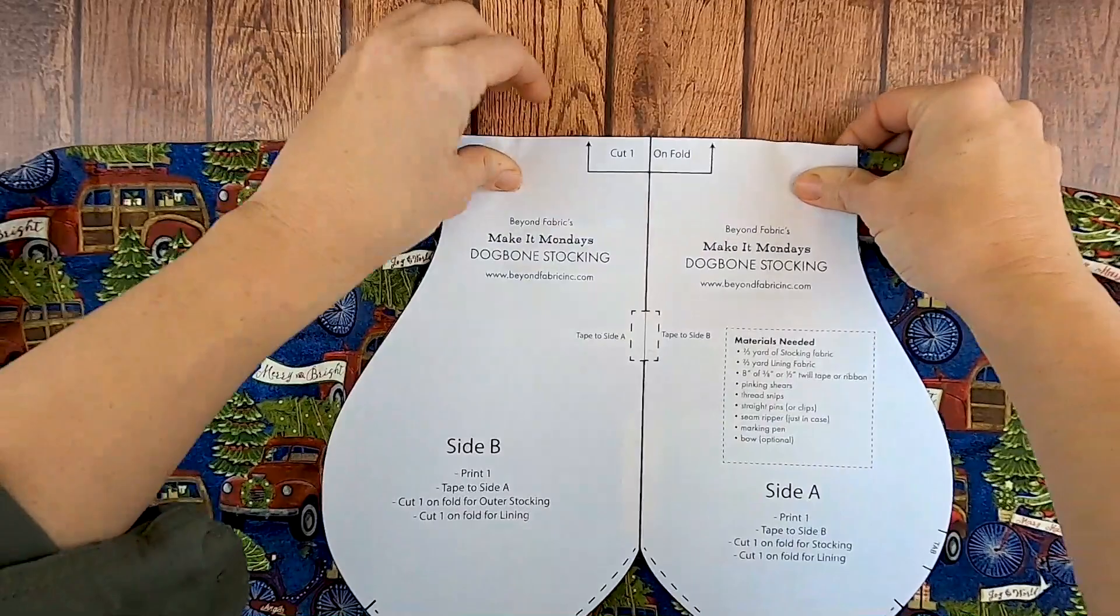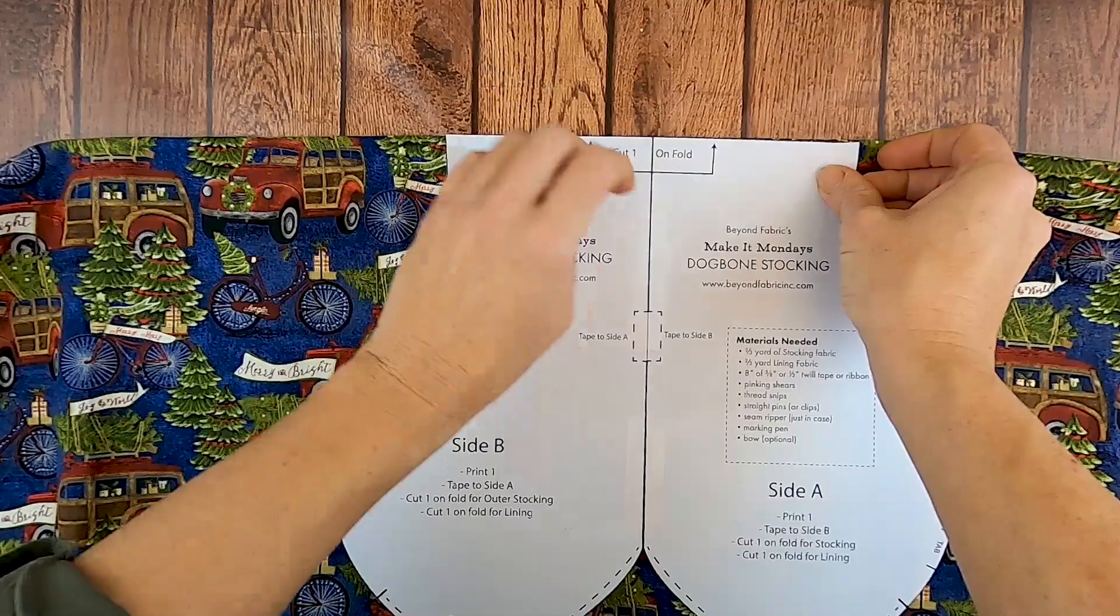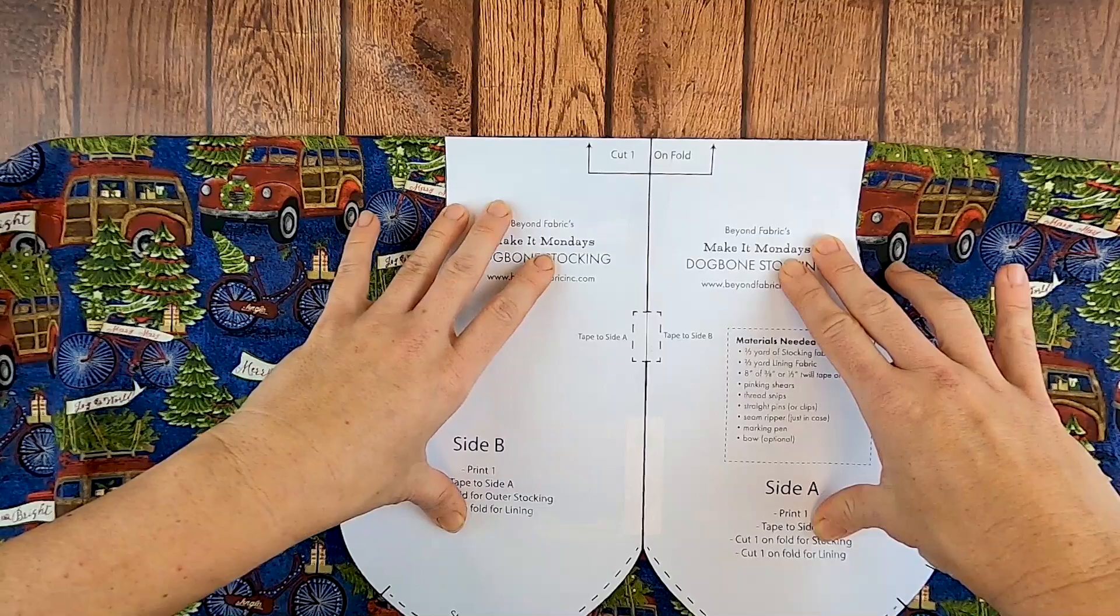And you really want to get it right on the fold. It's not too big of a deal if you don't. It's just going to make the dog bone stocking a little bit longer. But you really want to get it right there on the fold.